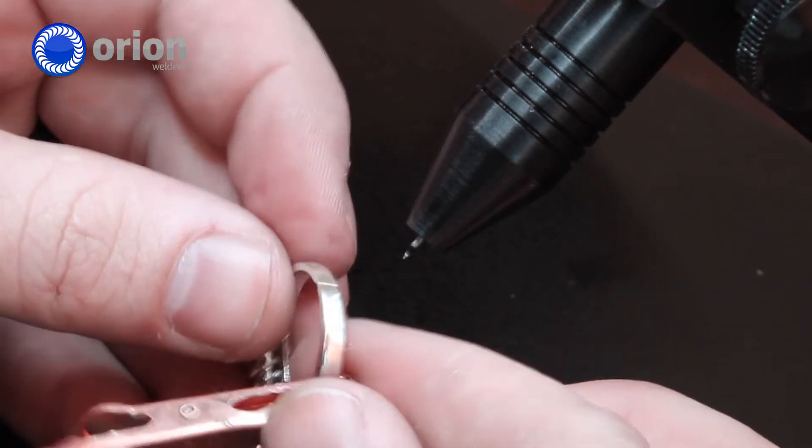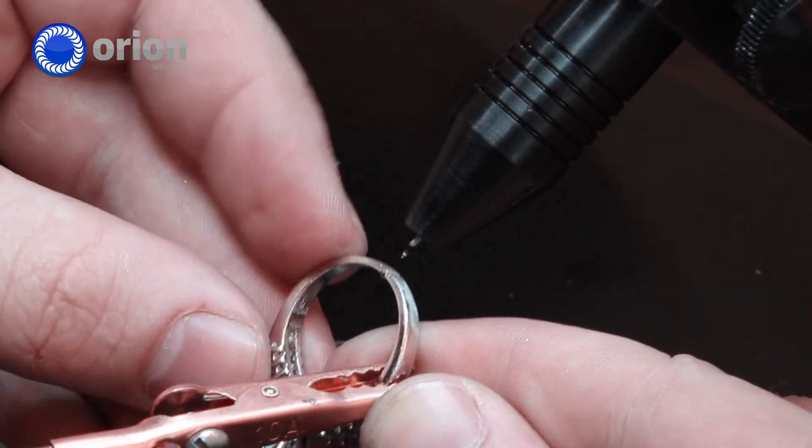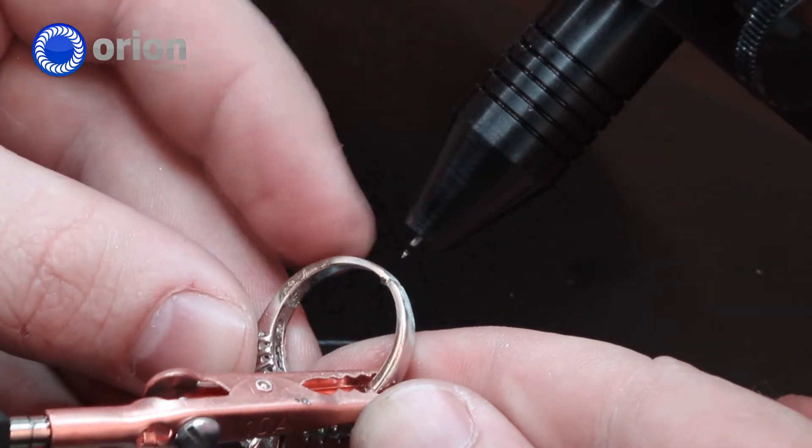I've just cut it and I'm going to weld it back together just to simulate. So I have a sharp electrode for this, even for silver, just to start out. So I have my piece grounded.